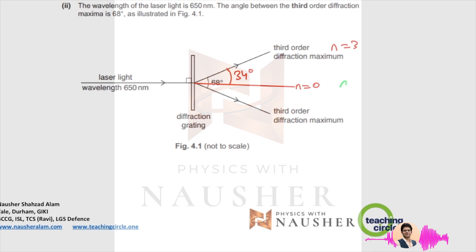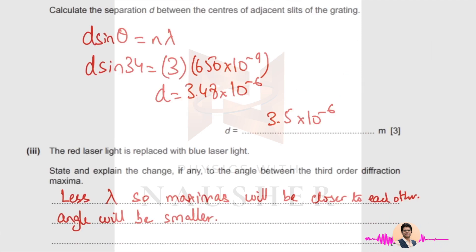When you're applying the formula d sin θ = nλ, n is 3. D you will have to find, the angle is 34 degrees, and the wavelength is 650 nanometers. So the answer you get is 3.5 × 10^-6 meters.